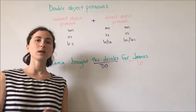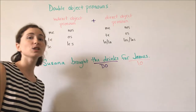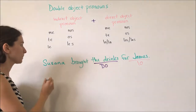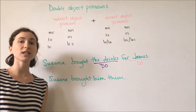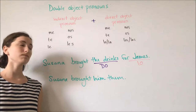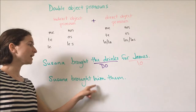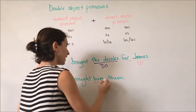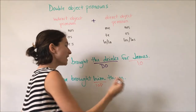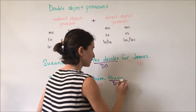Assuming that both the drinks and James were previously mentioned, we can make this sentence more concise by using our indirect and direct object pronouns: 'Susanna brought him them.' Since we already mentioned James and the drinks in the conversation or context preceding the sentence, we know that 'him' is James — our indirect object pronoun — and 'them' is the drinks, our direct object pronoun.